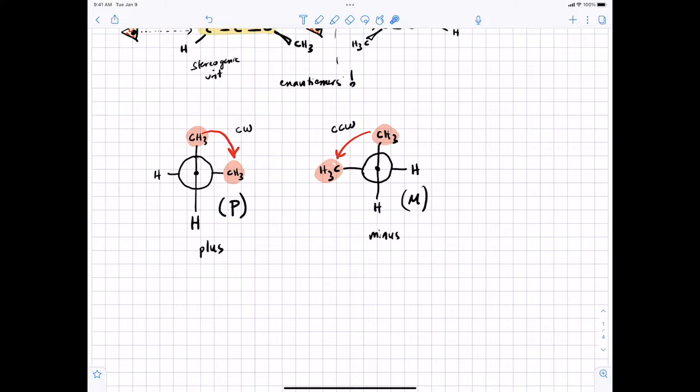If it is clockwise, we're going to call that P which stands for plus for like a dihedral angle. If you measured that angle, if you did the vector math to measure this angle between this vector and that vector, it would be positive. And then M for minus for counterclockwise.